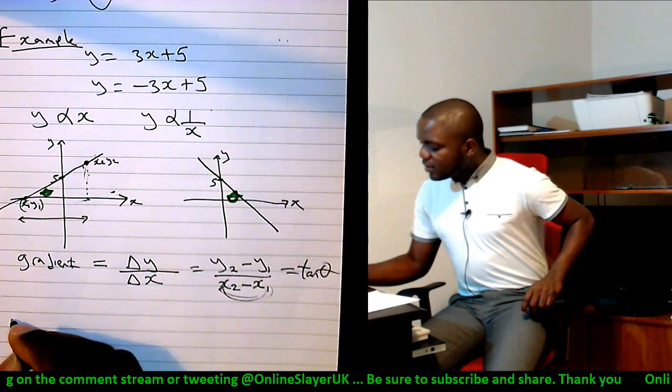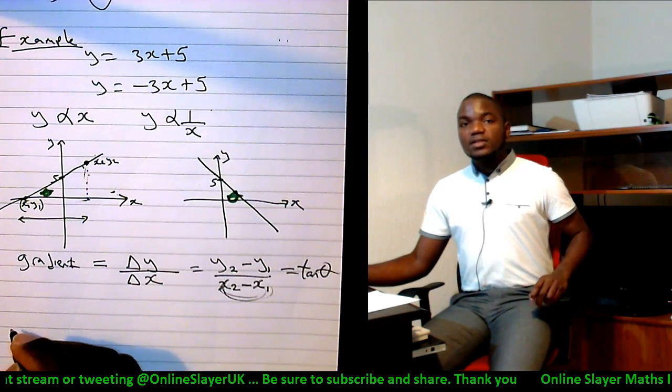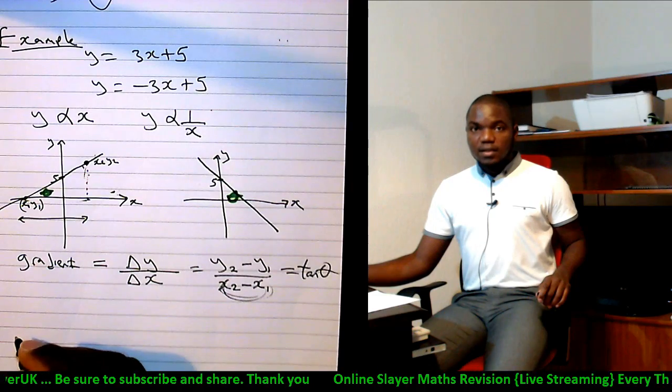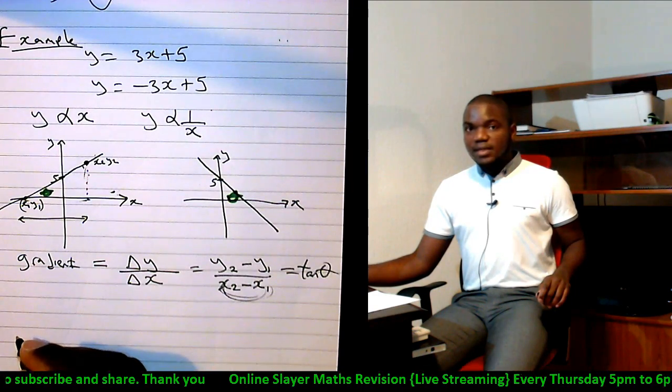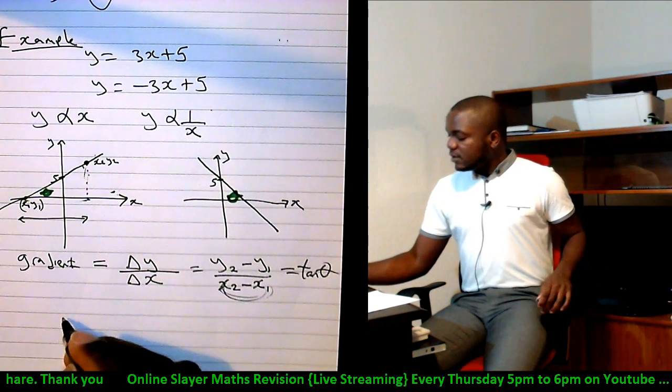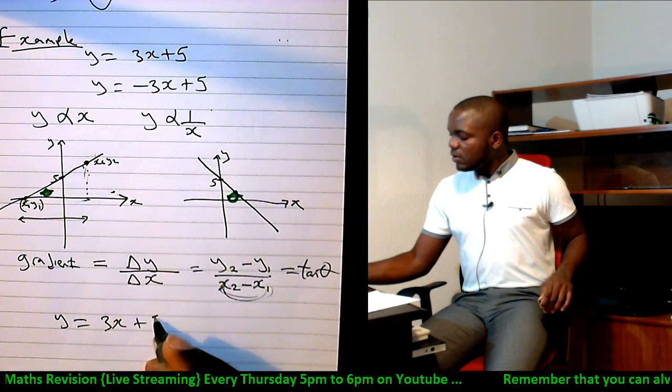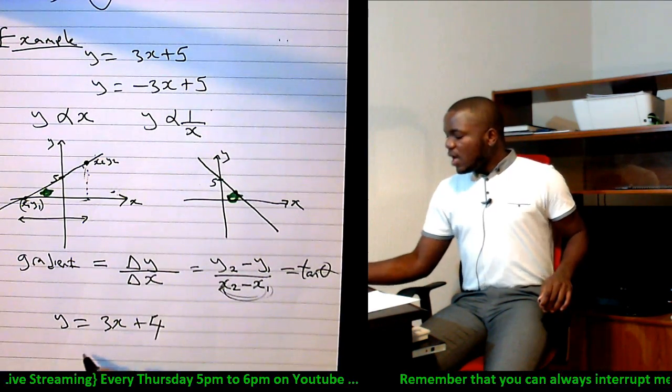Another thing that the gradient tells us is that the gradient lets us know when two lines are parallel and when two lines are perpendicular. For instance, you've got the line y equals 3x plus 4, and you've got the line y equals 3x minus 2.